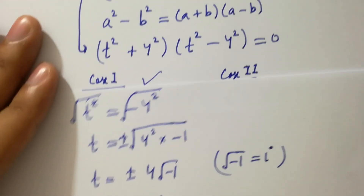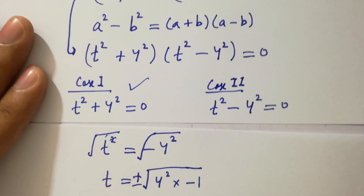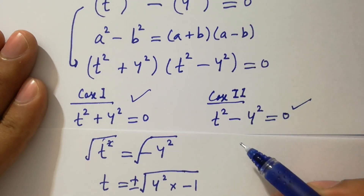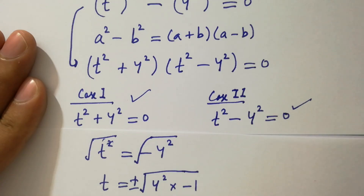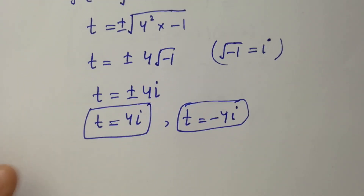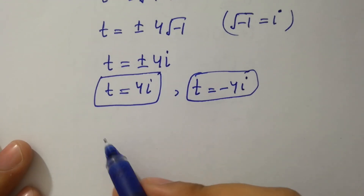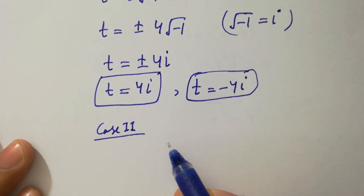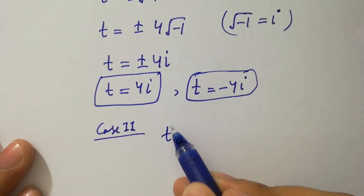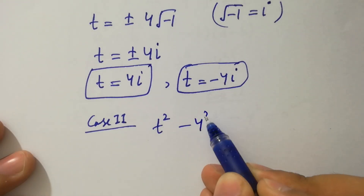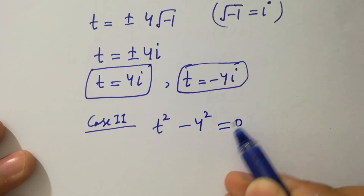Now from the second case, t squared minus 4 squared equals 0. Applying the formula a squared minus b squared, we get t plus 4 times t minus 4 equals 0, giving t equals 4 and t equals minus 4.